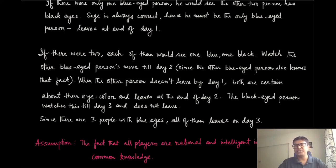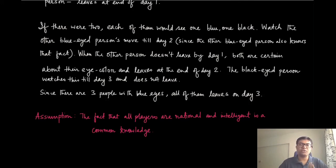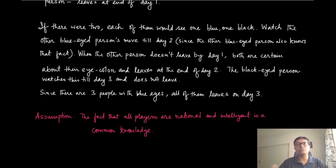That is the implication of common knowledge — a very interesting idea, even if its definition sounds a little funny. One of the assumptions we are going to make in game theory is that the fact that all players are rational and intelligent is common knowledge. You do not assume other players won't maximize their utilities or don't understand the rules. Rather, every player knows that all other players are rational and intelligent, and knows that they know this, and so on.